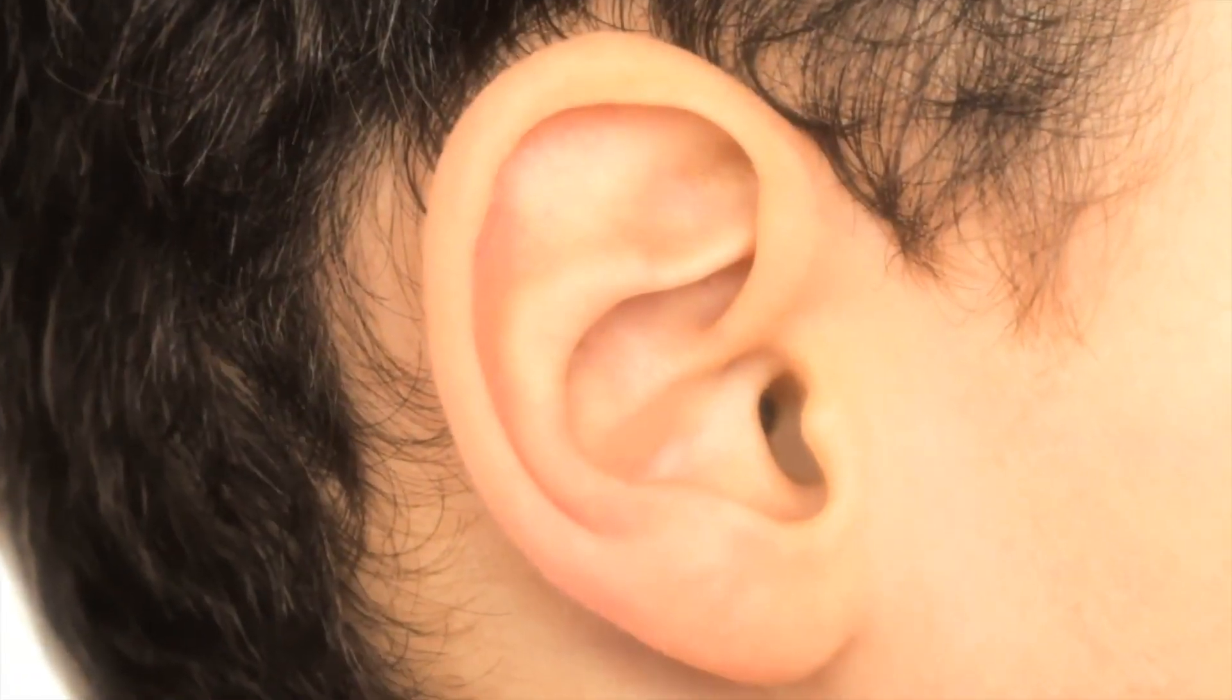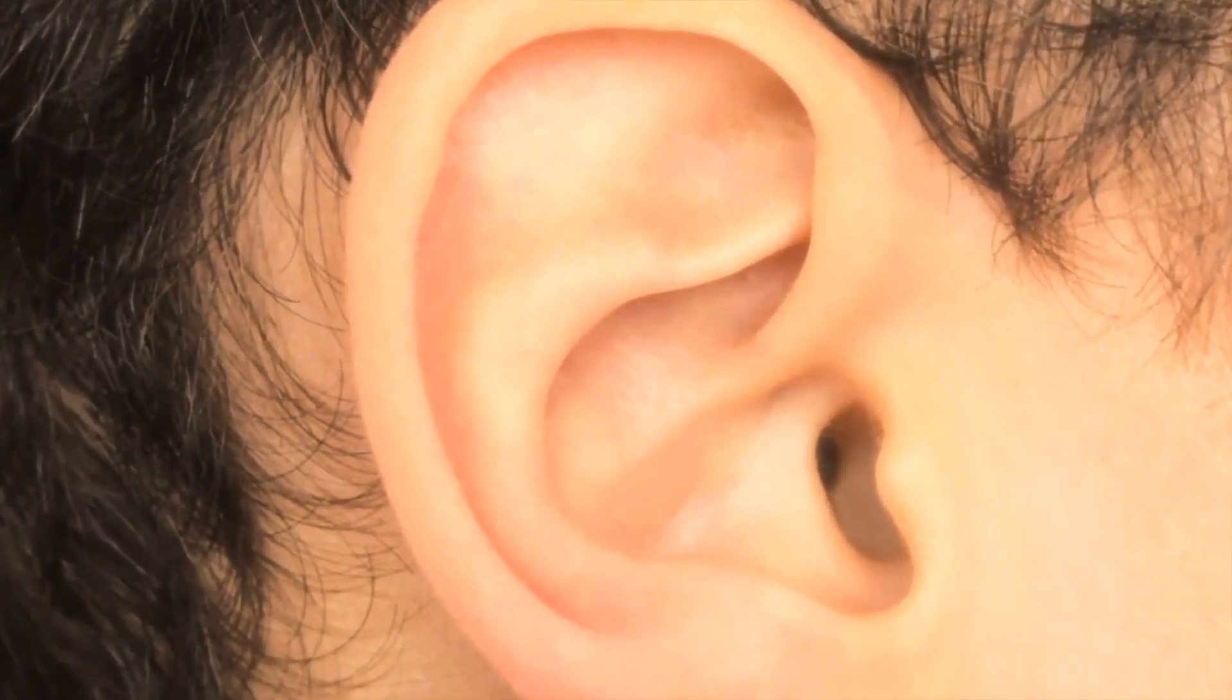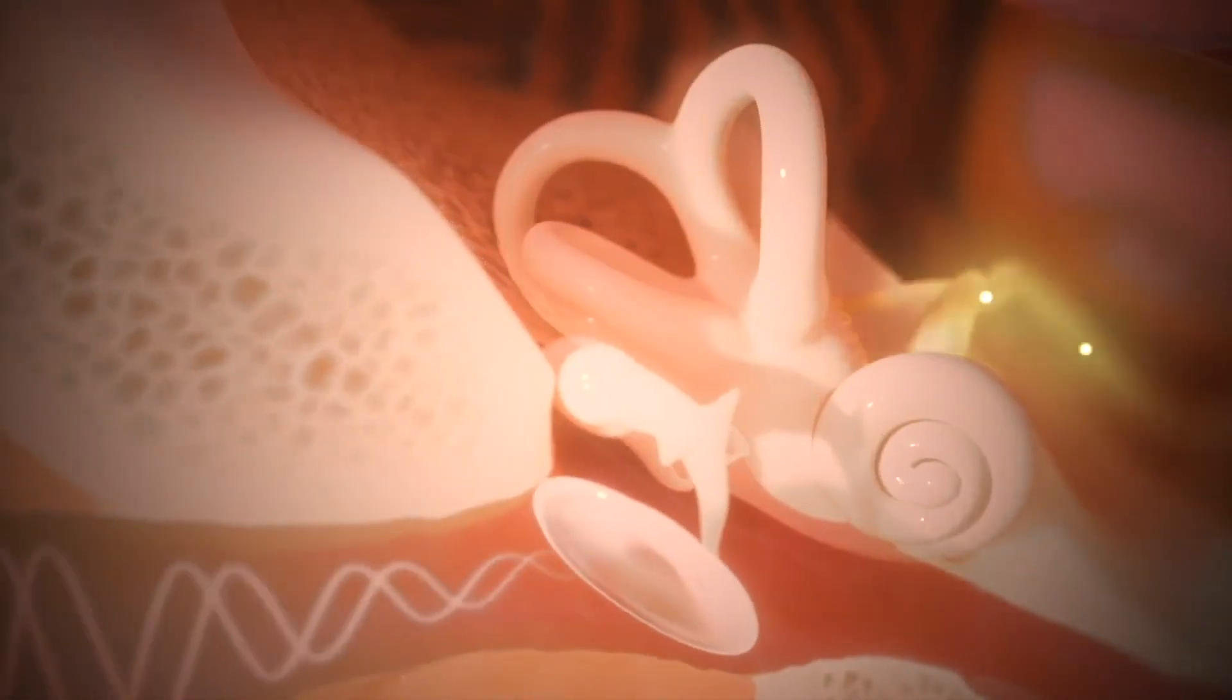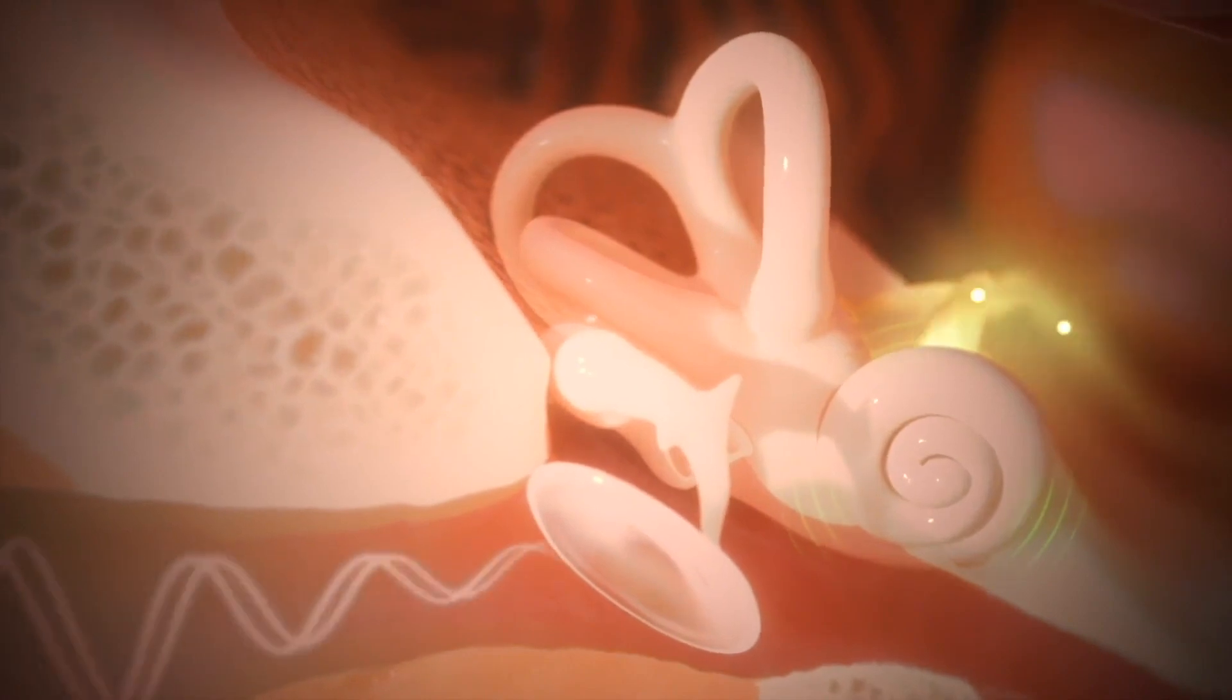The cochlear is a tiny shell-shaped structure inside your inner ear lined with thousands of sensory hair cells.